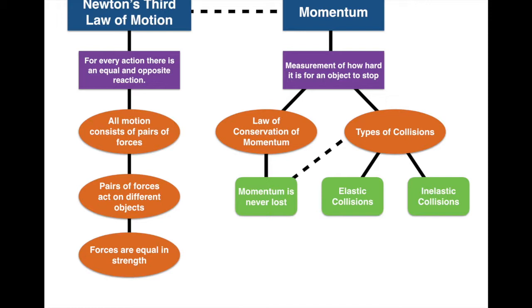Let's wrap up: Newton's third law of motion — for every action, there's an equal and opposite reaction. All motion consists of a pair of forces that are equal in strength. Related to this is momentum — the measurement of how hard it is for an object to stop. The law of conservation of momentum says momentum is never lost. When two objects collide, momentum is transferred along with kinetic energy. Elastic collisions — objects bounce into each other and keep moving in opposite directions. Inelastic collisions — all momentum and energy is transferred into another object and it doesn't move. The real-world application is car crash safety features: a longer collision transfers momentum and energy more slowly, meaning less force and less impact on the people in the car.